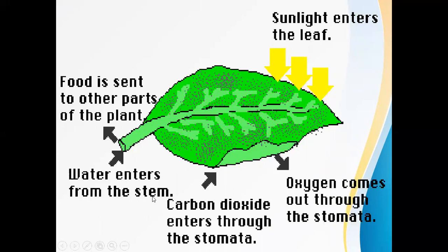Water enters from the stem, while carbon dioxide enters through the stomata. Stomata are the small pores under the leaf through which carbon dioxide enters. With the help of sunlight, water, and chlorophyll, the plant prepares food, which is sent to other parts through the stem. Oxygen comes out through the same stomata, and that oxygen is used by other living things.